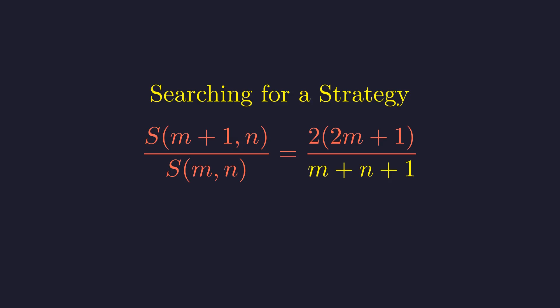But actually, this failure is telling us something important. Look at that denominator. It's got both m and n coupled together. This suggests that maybe we shouldn't think about stepping just in the m direction. Maybe we need to consider both directions at once.